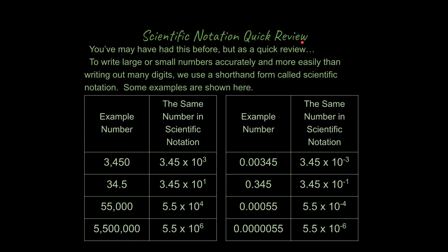Next up, we're going to talk about scientific notation. You may have had this before, so I'm going to do this as a quick review. Scientific notation is actually really useful to write large or small numbers accurately and more easily than writing out many digits or typing out many zeros into a calculator. If you know what you're doing, you can use this in a calculator, and it makes life a lot easier. So let's start with these examples on the left-hand side. If we start with an example number of 3,450, there's actually an implied decimal place right here. You don't see it, but it's implied that it's there.